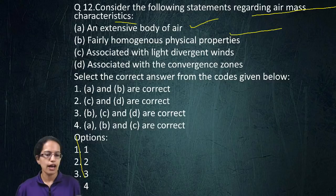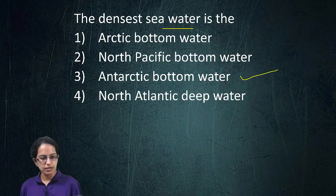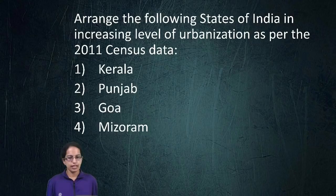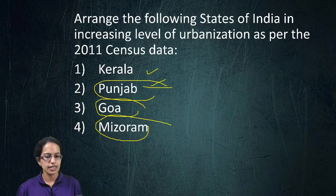The next question: the densest seawater is seen in the Antarctic bottom waters, so option three is the right answer. The following question involves arranging states in increasing level of urbanization. Goa is the most urbanized among them, then Mizoram, followed by Kerala and Punjab. Punjab is the least urbanized among these.